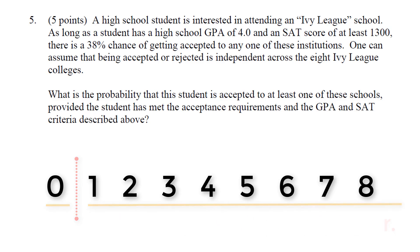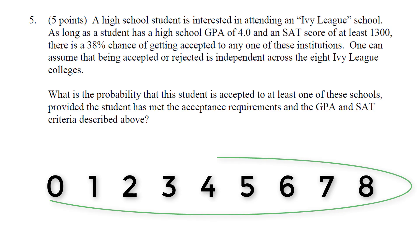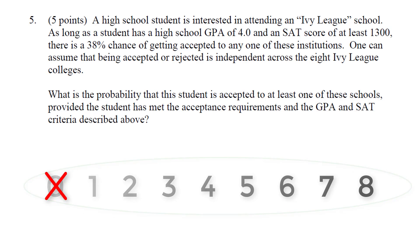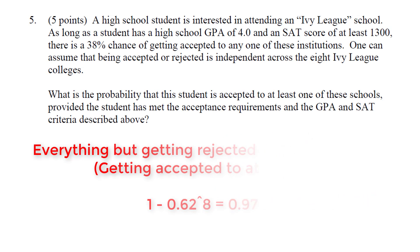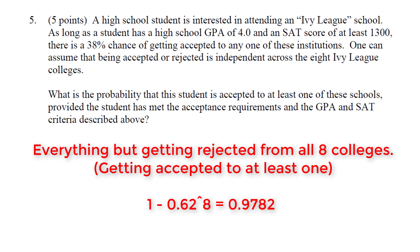This is where we start to figure out the question. We are looking for the probability of everything but getting rejected from all eight colleges. Everything but getting rejected from all eight colleges is the probability of at least one accepting you, which can be written as 1 minus the complement. The probability of getting rejected is 0.62, so getting rejected from all eight colleges is 0.62 to the eighth power. Therefore, 1 minus 0.62 to the eighth power gives us the probability of getting accepted to at least one college.